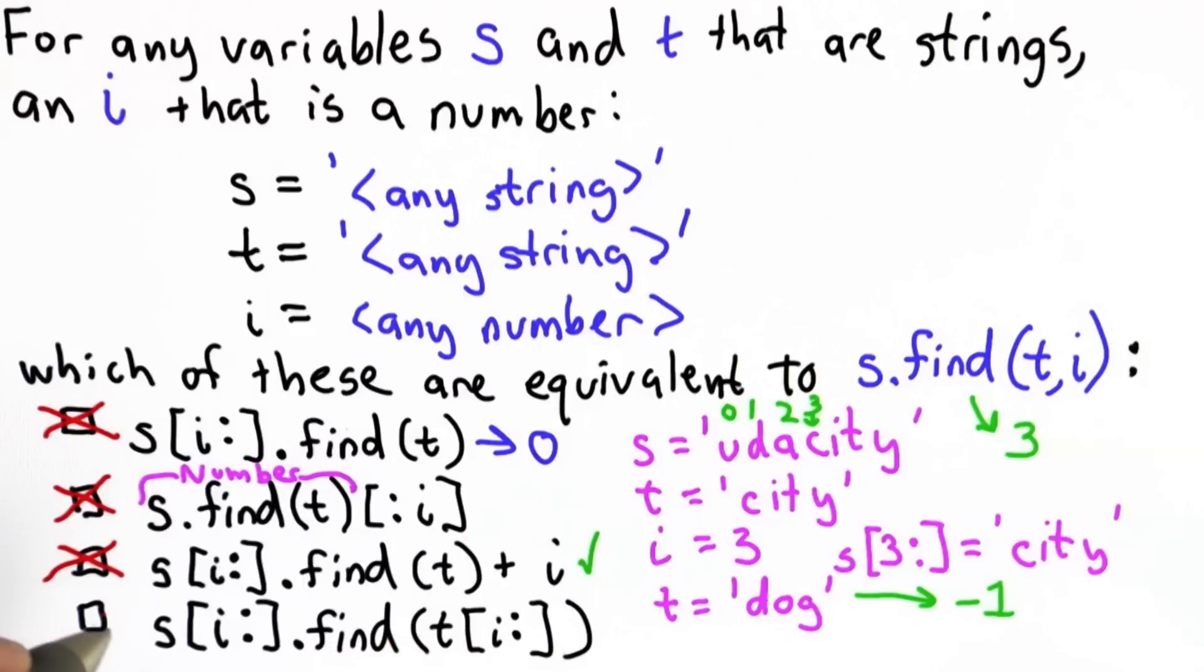The fourth one is also not equivalent. For the fourth one, we're starting from selecting the sub-sequence of s starting from position i. And we're looking for the string t where we sub-sequence from t starting from position i. This won't give us the same result as s.find(t, i).